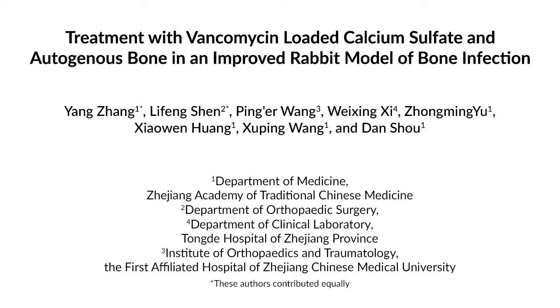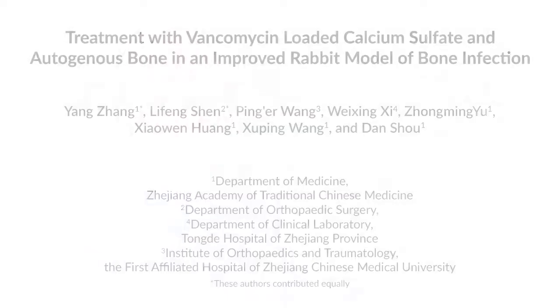A reproducible animal model is very important for bone infection research. However, currently there is no rabbit model for which the infection status and the number of bacteria is consistent. Our bone infection rabbit model uses a consistent bacteria and is treated by vancomycin-loaded calcium sulfate and autogenous fragments.